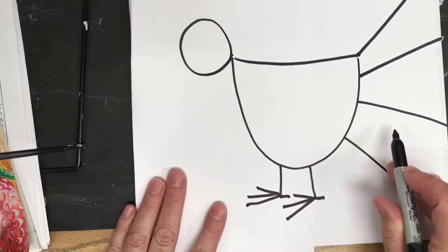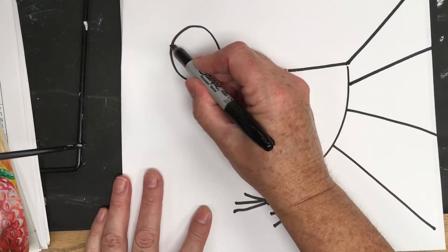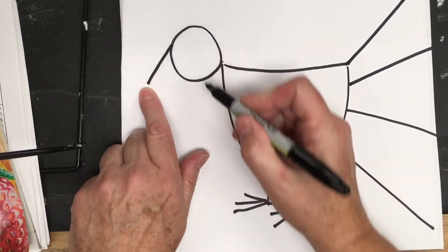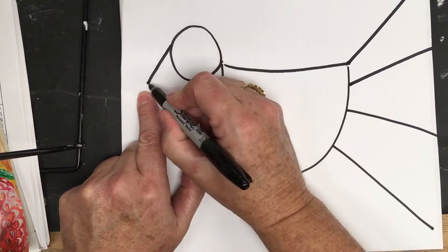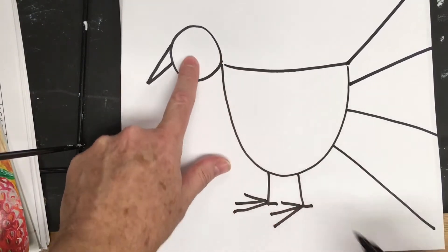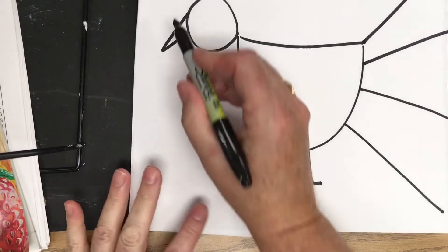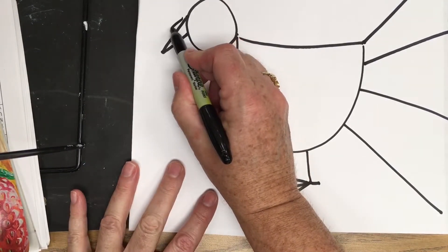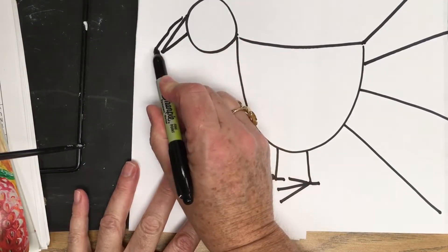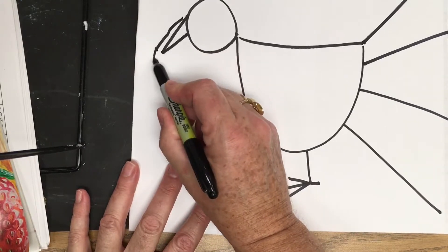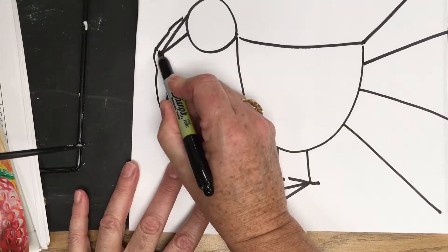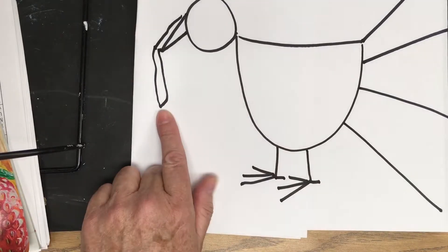And now I'm going to work on the beak. And the turkey beak is diagonal down. And then I'm going to go straight back to the head. And then I'm going to work on the fleshy skin right in front off the beak. And then it hangs down and comes back. Who remembers the name of that?